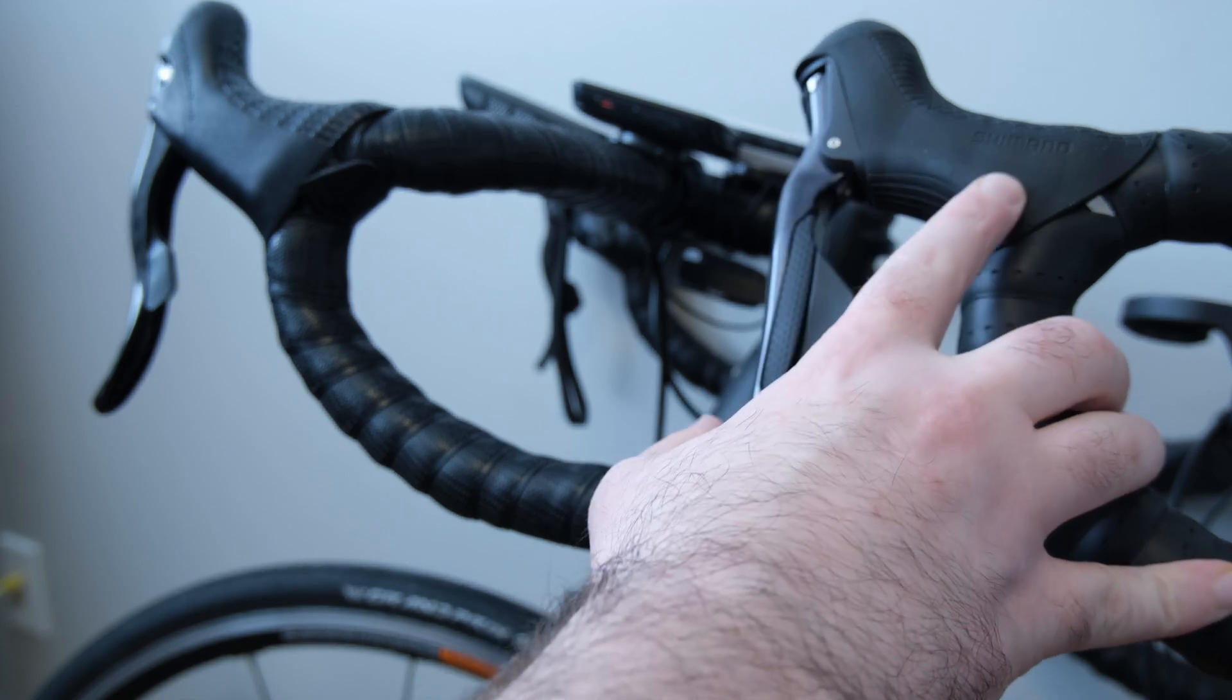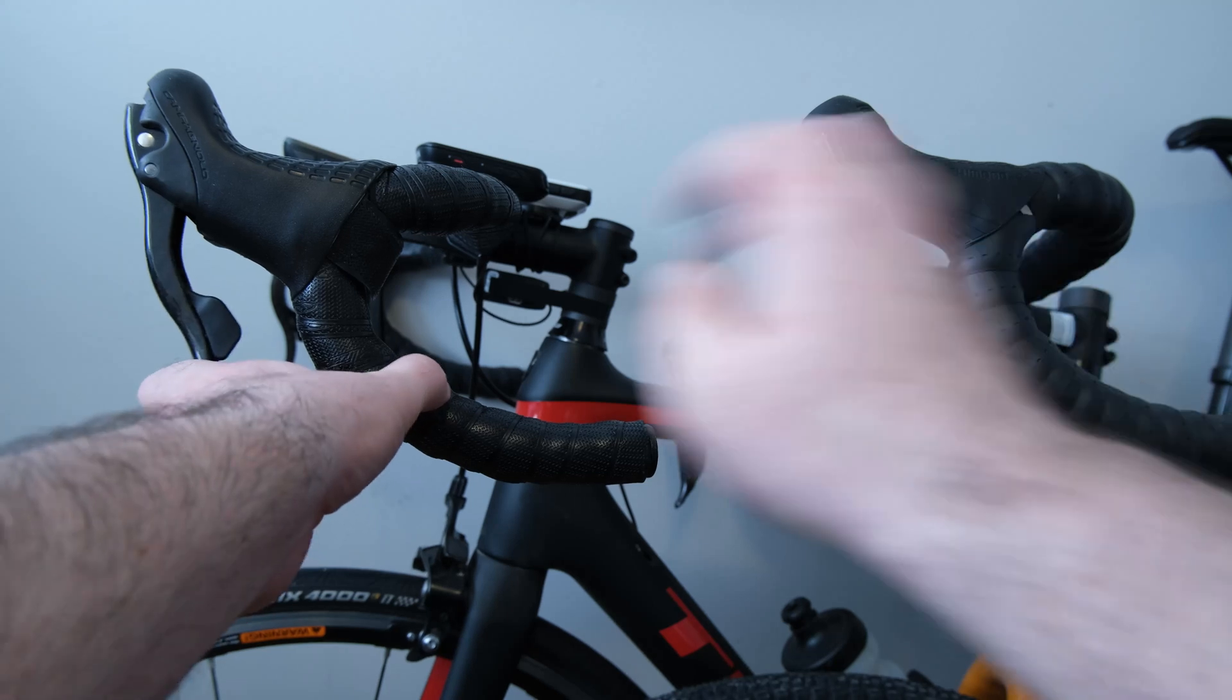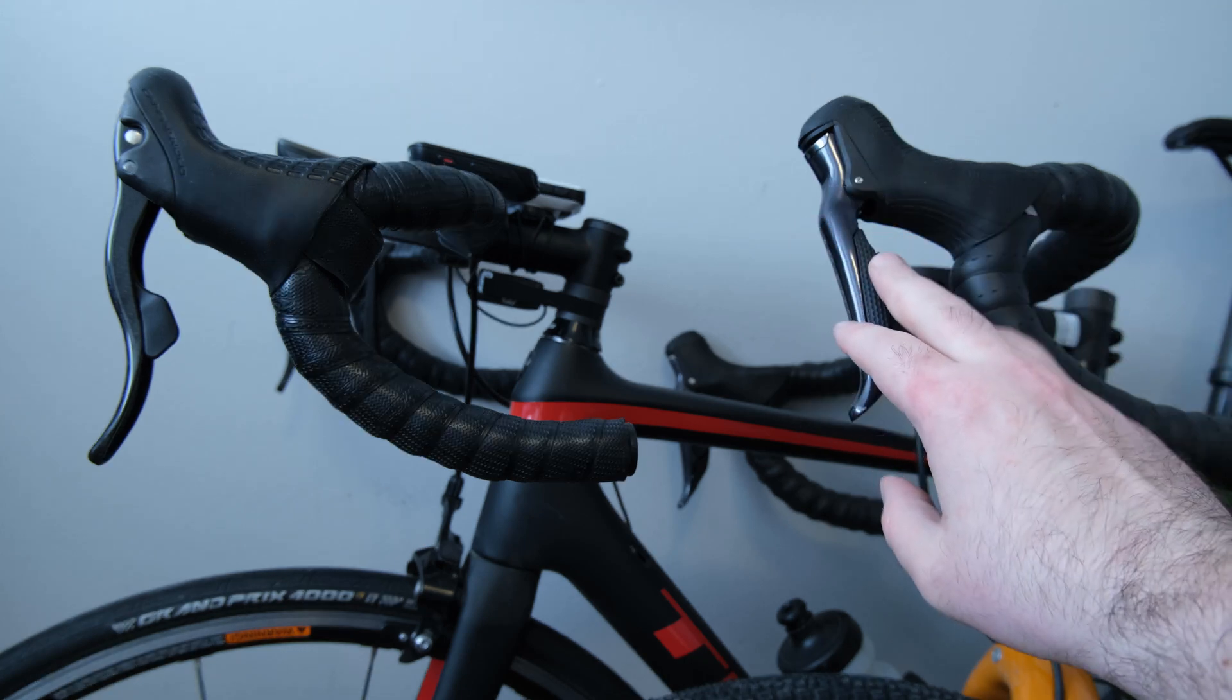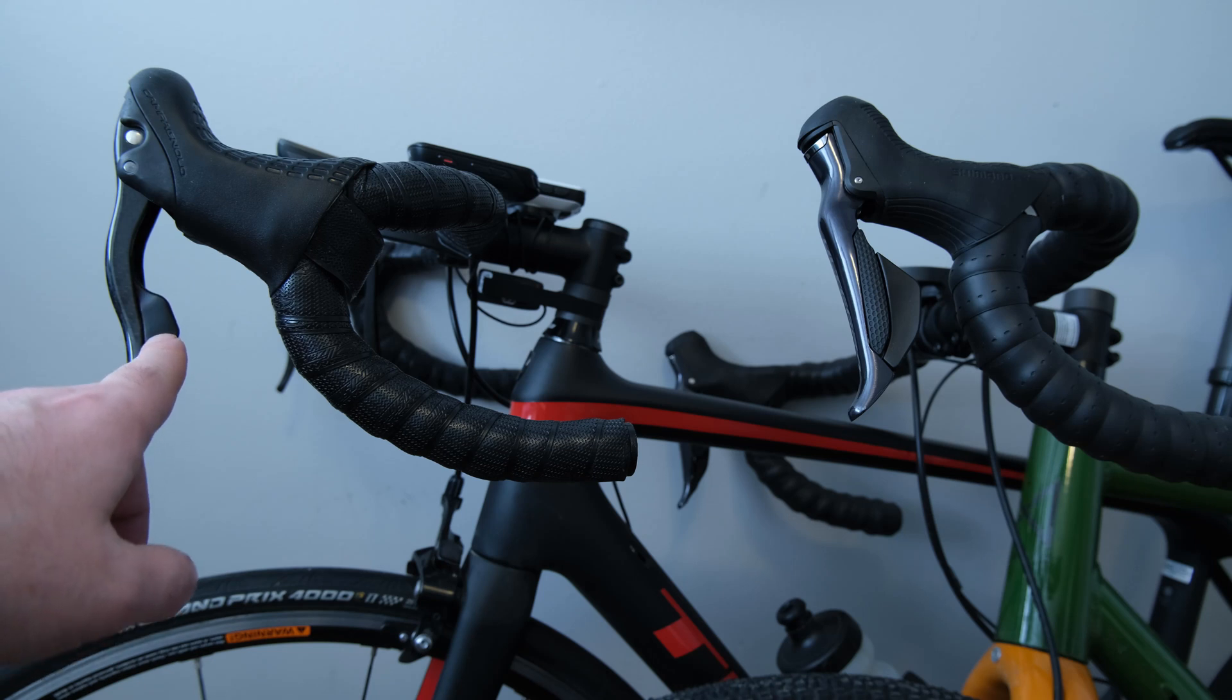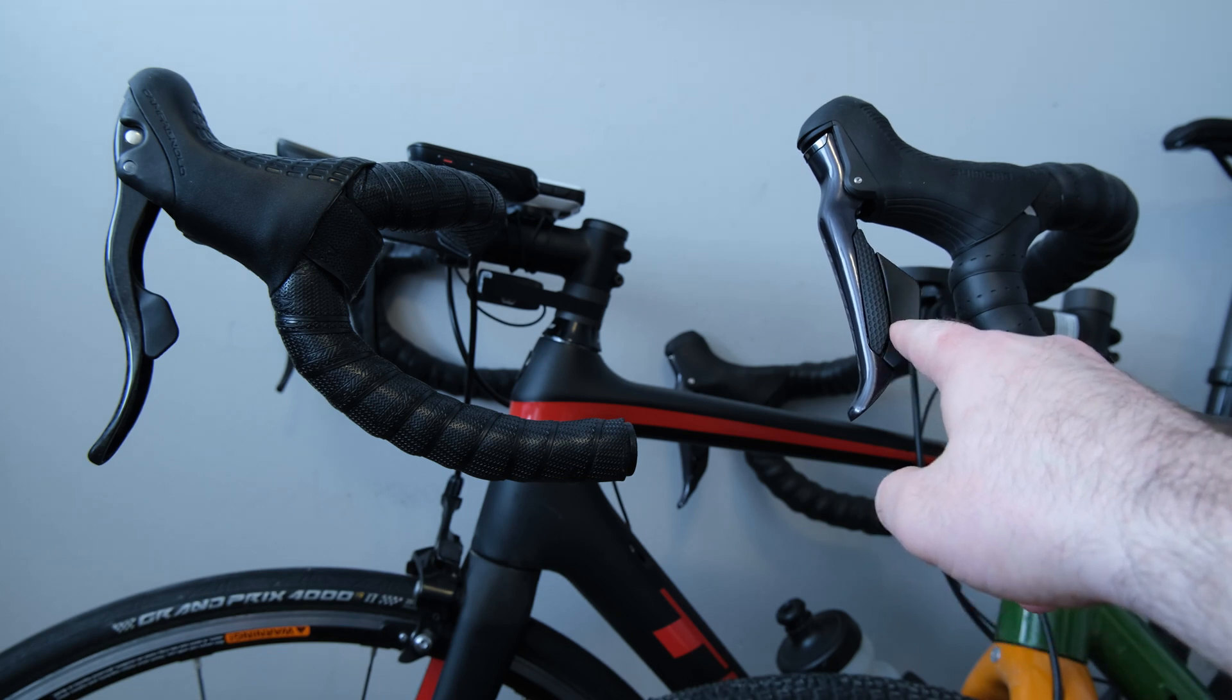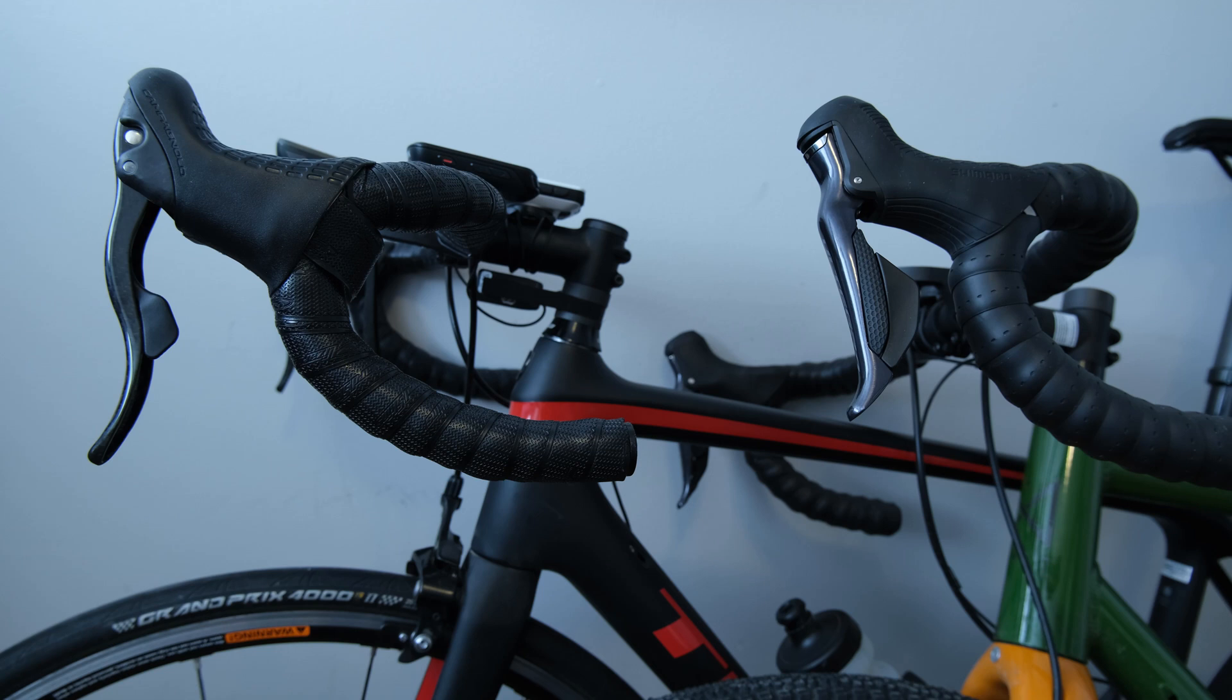So as you can see here, we've got a Shimano. This is an R-8000, so Ultegra 8000 series. This is a hydraulic groupset. This is a mechanical groupset. So the Campagnolo lever travels with all the mechanism for this all kind of contained here. It all pivots at the same point. So when I press this, the mechanism is actually up here. When I press this, the button is actually right here. So what's happening is very different.